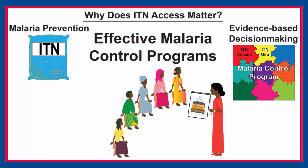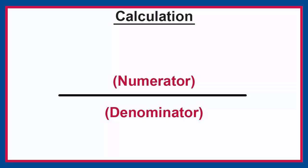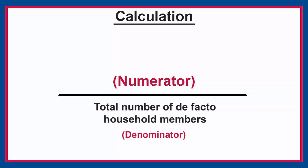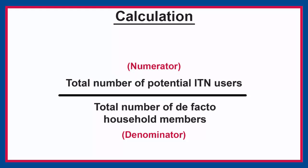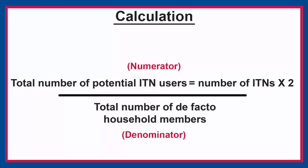Let's look at calculating the access indicator. The denominator is the total number of de facto household members — in other words, the total number of individuals who spent the previous night in surveyed households. The numerator is the total number of potential ITN users. To calculate potential ITN users, we determine the number of individuals who could sleep under an ITN if each ITN in the household is used by two people. We do this by multiplying the number of ITNs in each household by 2. Then we divide the total number of potential ITN users by the number of de facto household members to get ITN access.